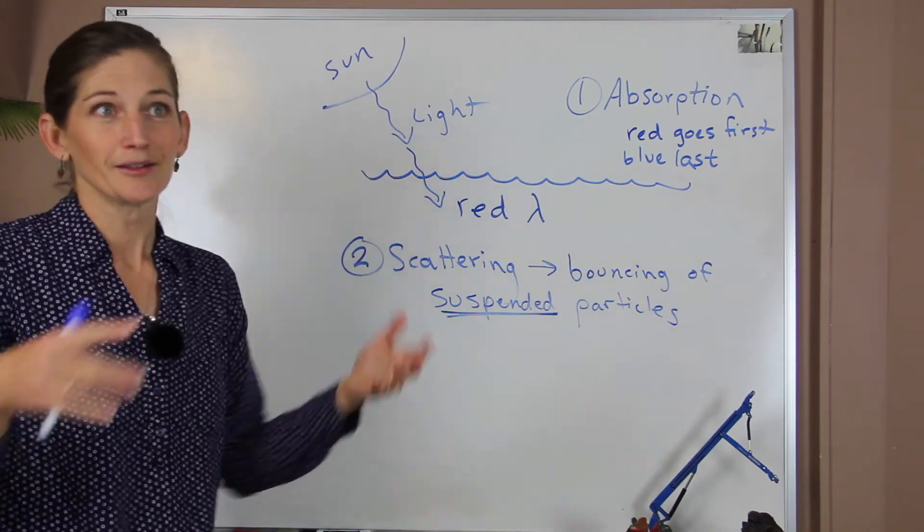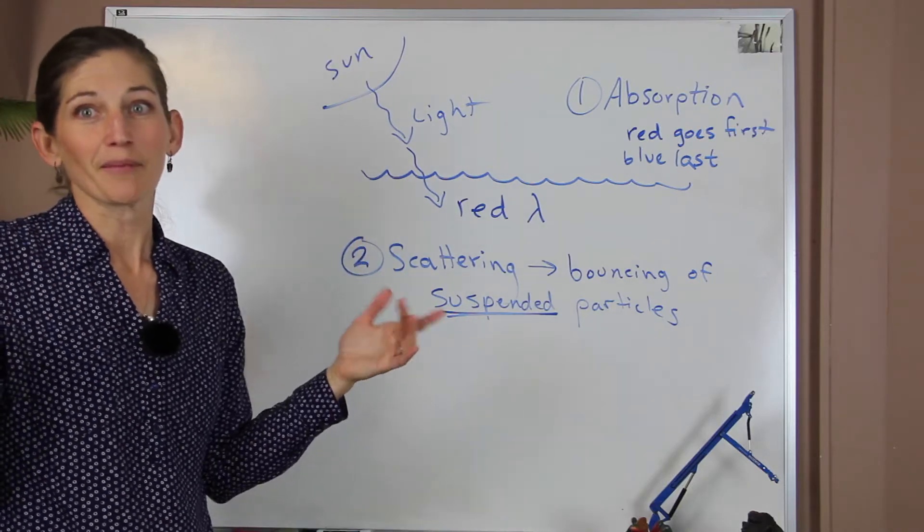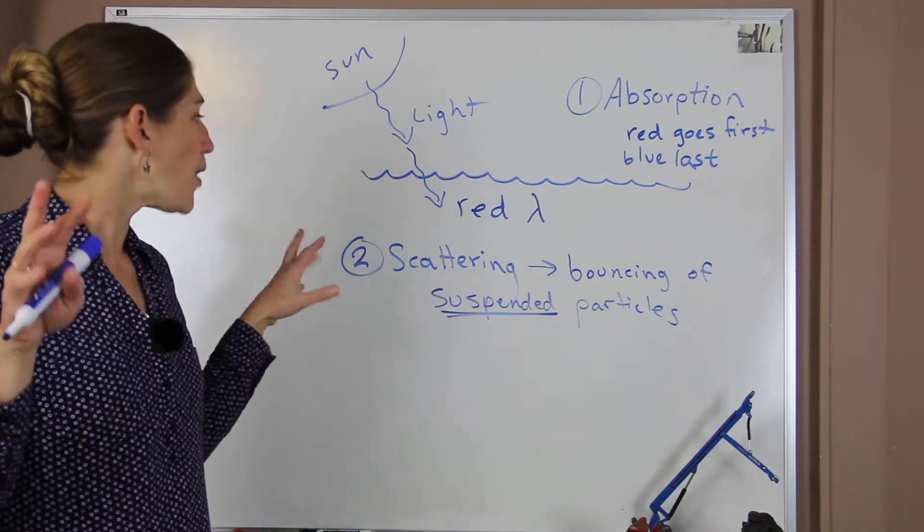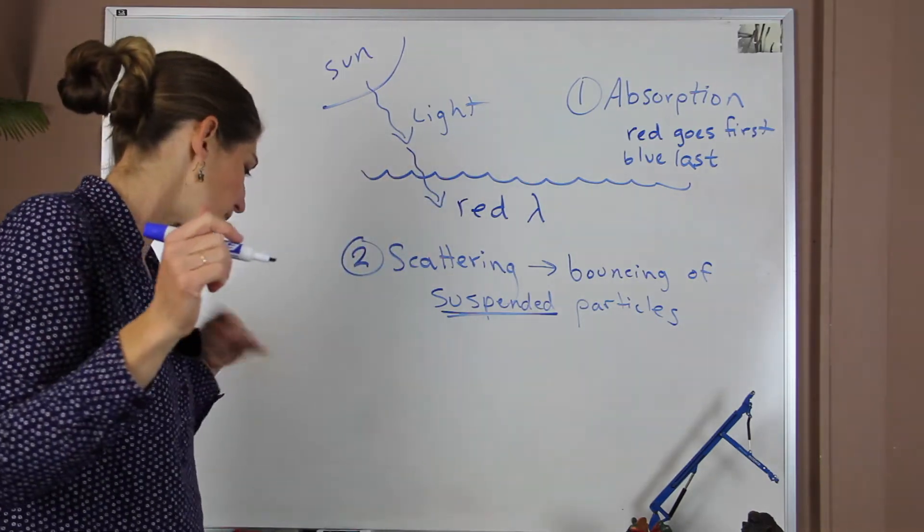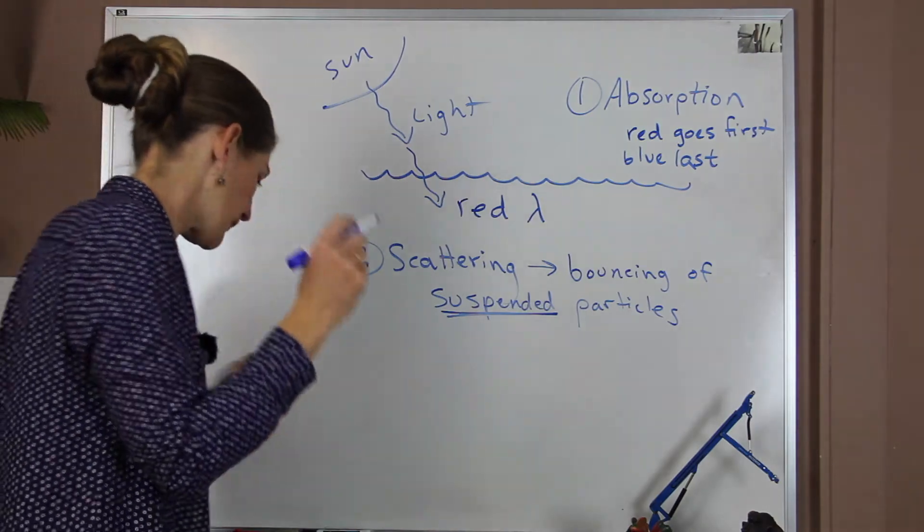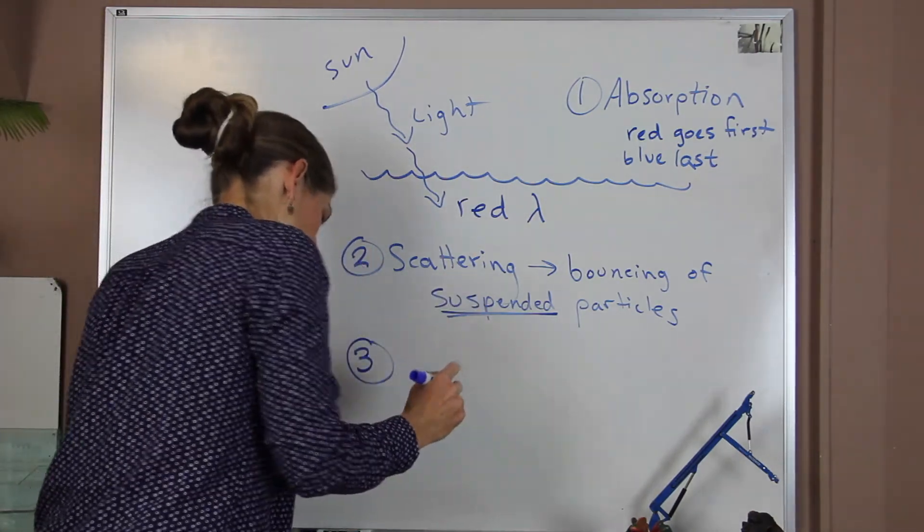It can be dead organic matter. It can actually be living organic matter. So if you have algae in the water. All of those things are in the water column, and the light will bounce off of them and be scattered. And that's going to change the color of the water. And then the third thing actually just comes down to the particulate composition.